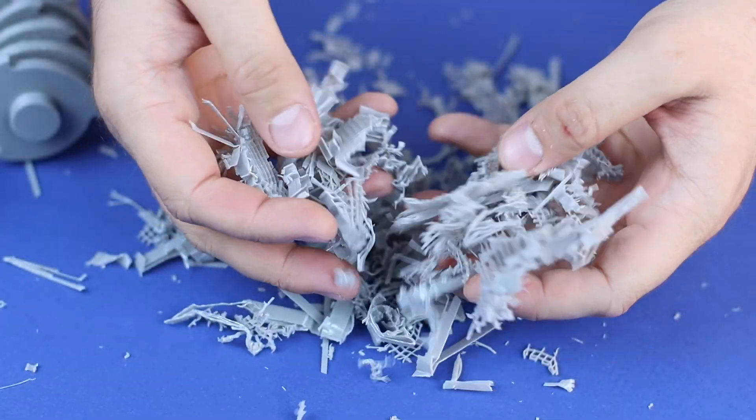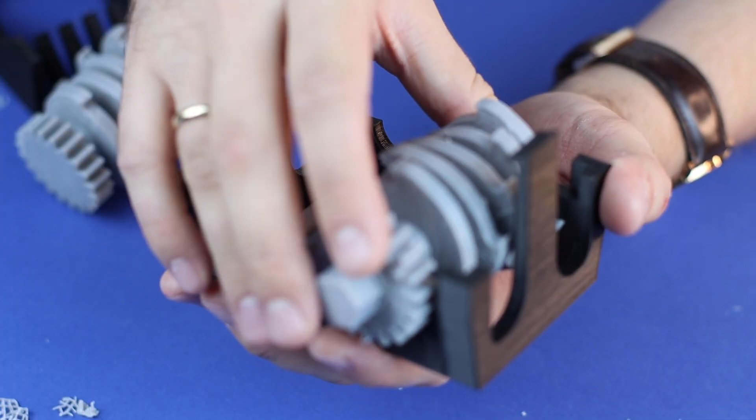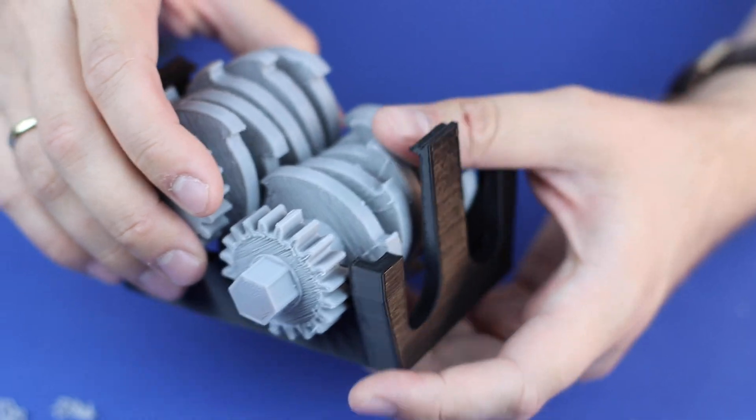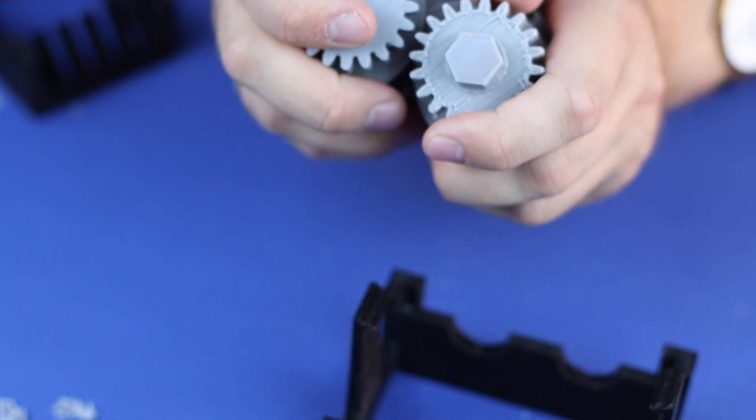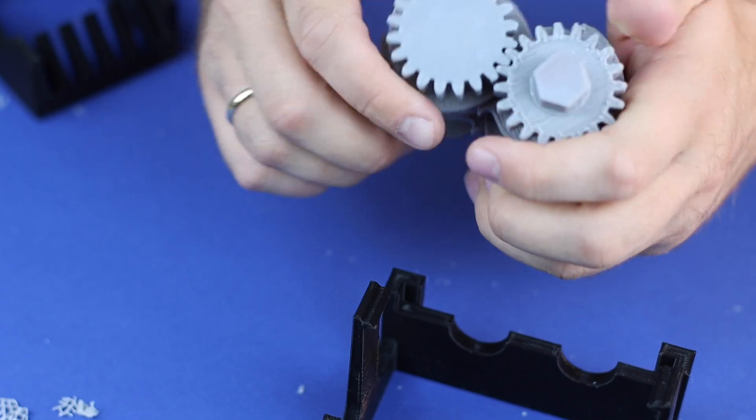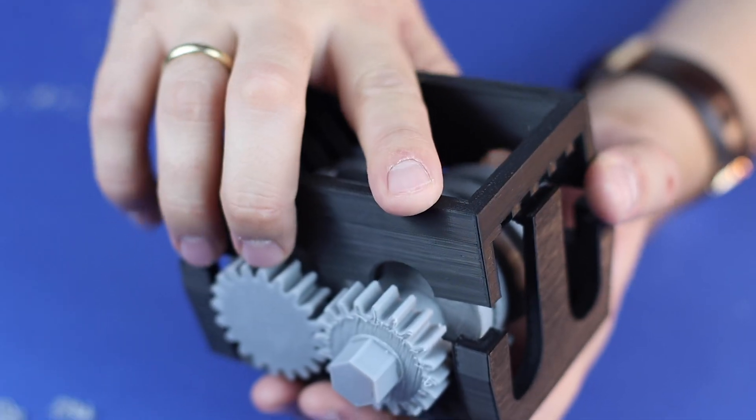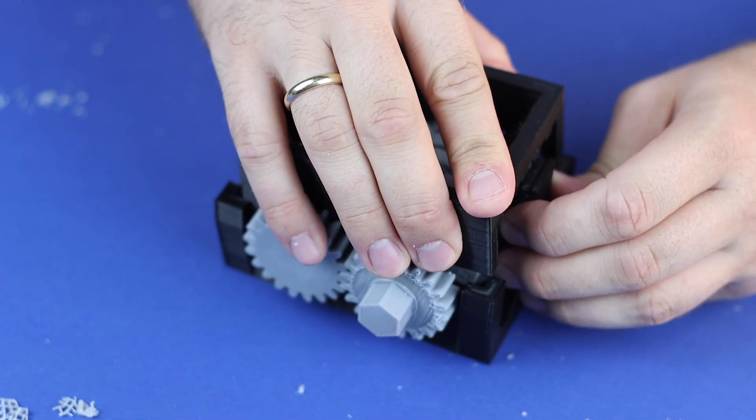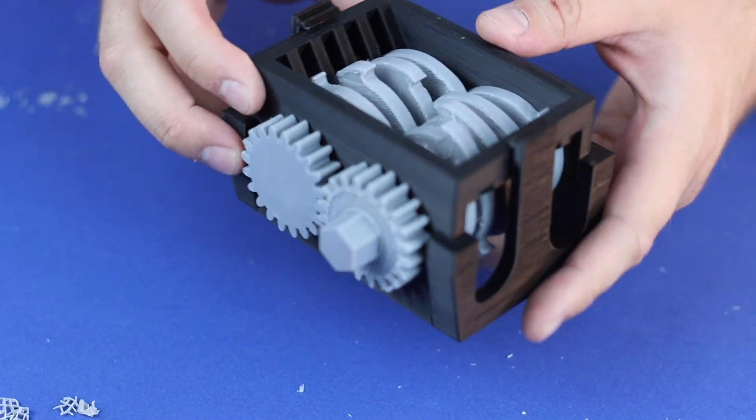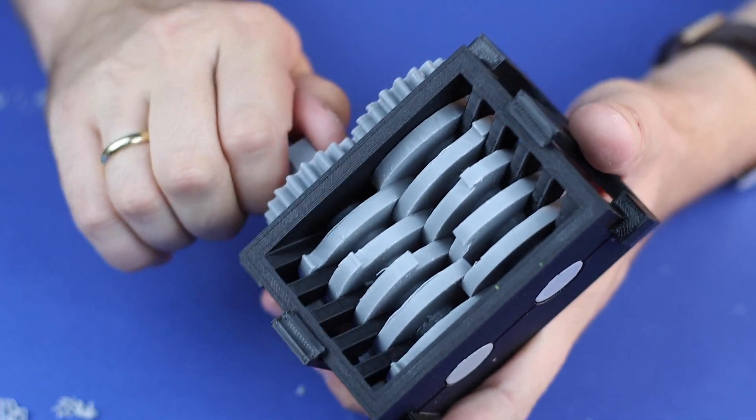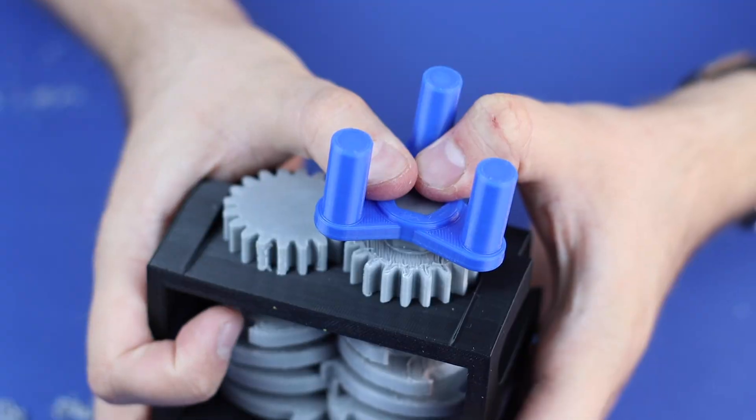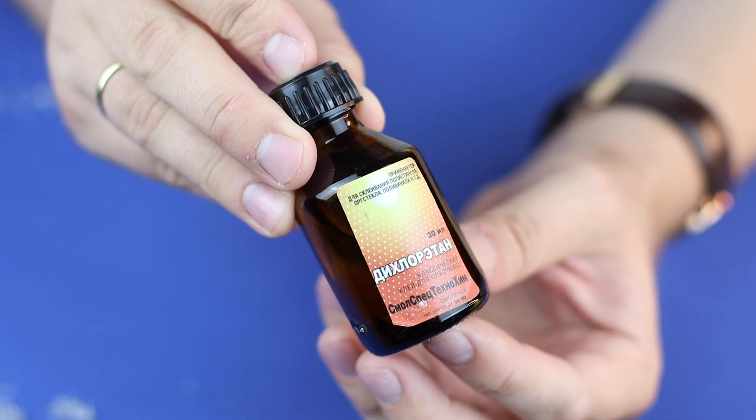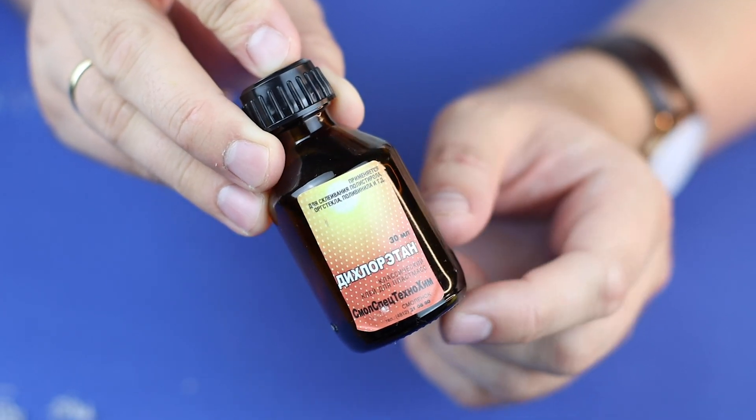Look at this mess! Now we need to glue these two parts. I'll be using dichloromethane. It dissolves plastic, so we can glue together two parts.